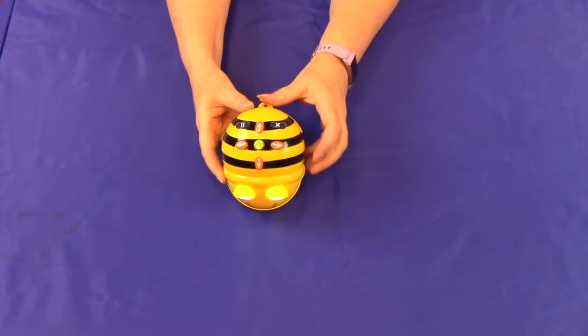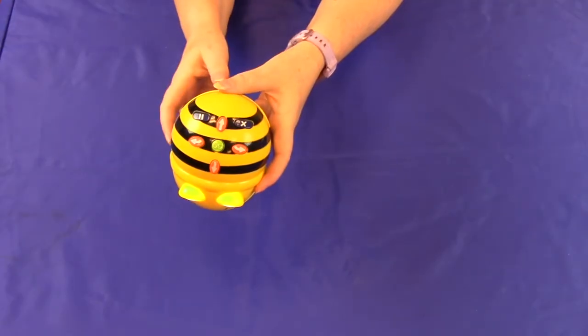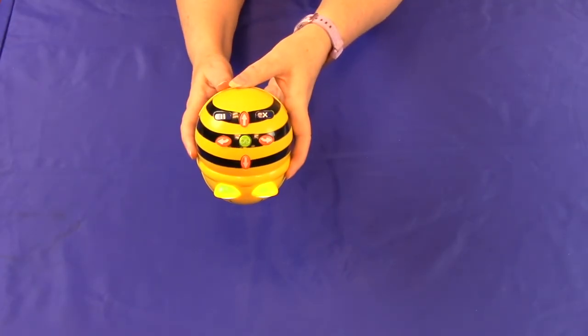Then they can set it on the floor and use the directional buttons on the Bee's back to program it any custom route that they would like.